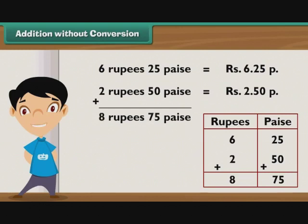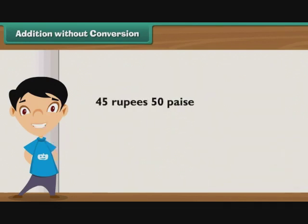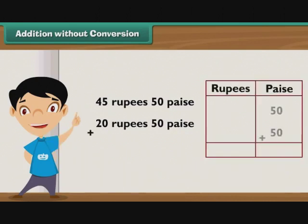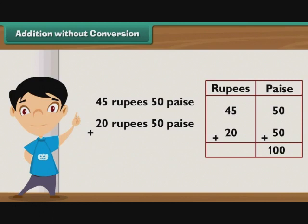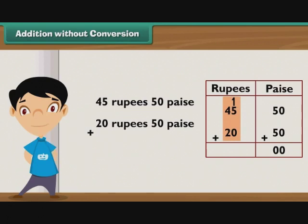The result of the addition is 8 rupees 75 paise. Now take another example. Add 45 rupees 50 paise and 20 rupees 50 paise. Step 1: Add the numbers in the paise column. 50 plus 50 is equal to 100 paise. So write 00 in the paise column and carry forward 1 to the rupee column. Step 2: Add the numbers in the rupees column. 1 plus 45 plus 20 is equal to 66 rupees. Write 66 in the rupees column.